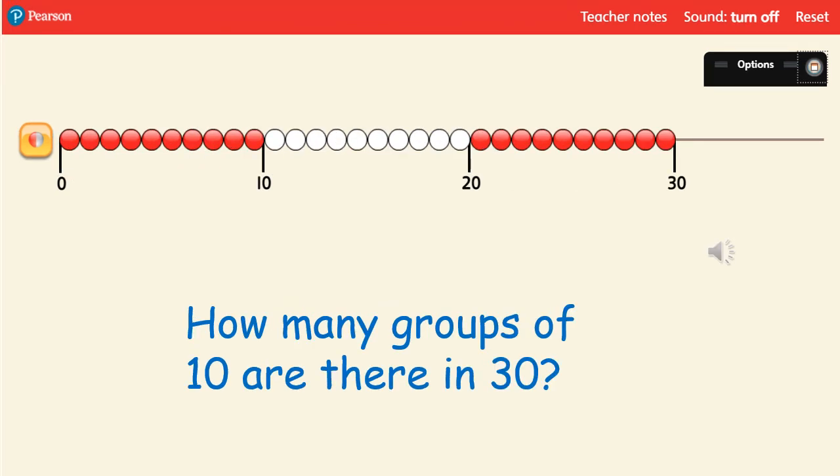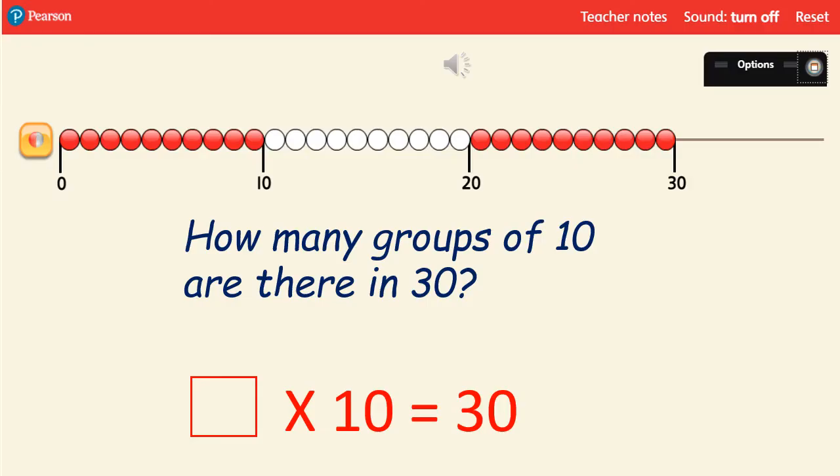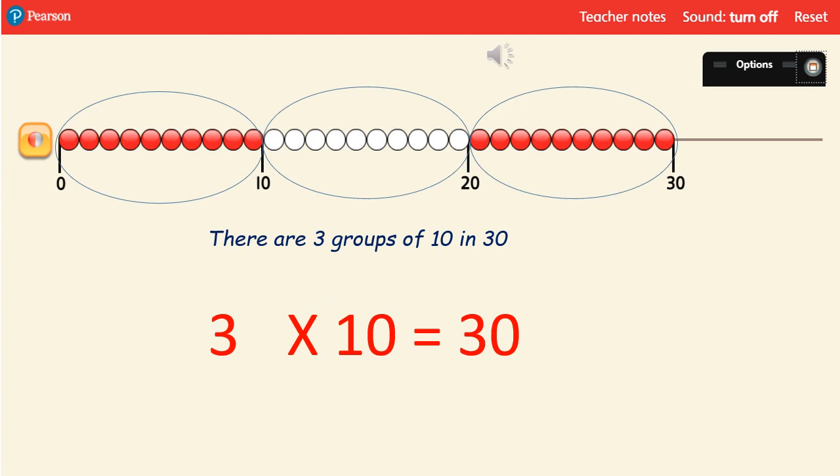How many groups of 10 are there in 30? Pause the video and have a go. So I've lined up 30 counters again and put them into groups of 10. Let's come back to our original bead string tool. We wanted to find out how many groups of 10 are in 30. Something times 10 equals 30. I bet you worked it out, didn't you? There are 3 groups of 10 in 30. 3 times 10 equals 30.